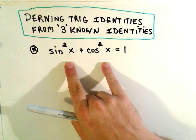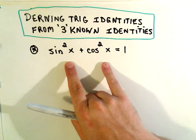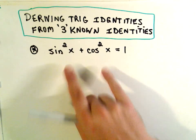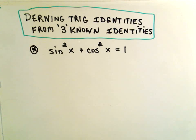This is one you should have memorized, sine squared x plus cosine squared x equals one. It's easy to derive this using the Pythagorean theorem, but I'm not going to do that in this video.